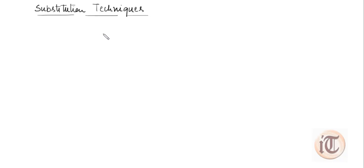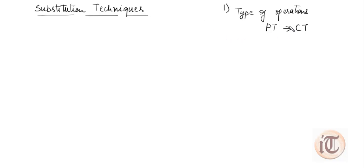In the theoretical concept, as you know, there are three independent dimensions of a cryptographic system. The most important dimension is the type of operations you are using to transform any plain text into ciphertext. There are two types of operations through which we can transform plain text into ciphertext: one is substitution and another one is transposition.